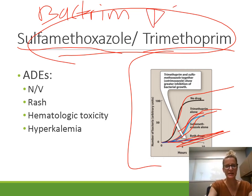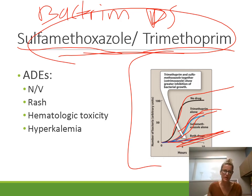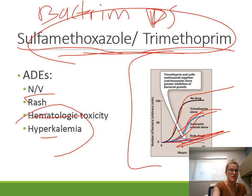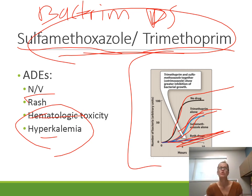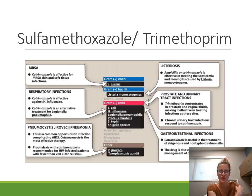TMP-SMX is very commonly used. Adverse effects of the combination include nausea, vomiting, rash, possible hematologic toxicity, and hyperkalemia. For hyperkalemia, be cautious if patients are also on ACE inhibitors or potassium-sparing diuretics, or if they are already prone to hyperkalemia, to avoid worsening it.